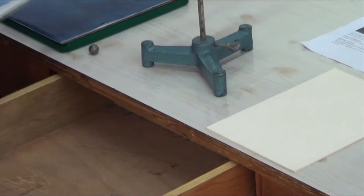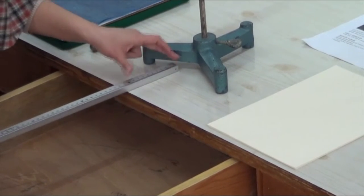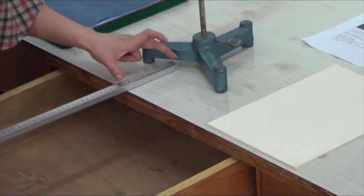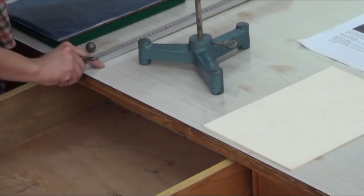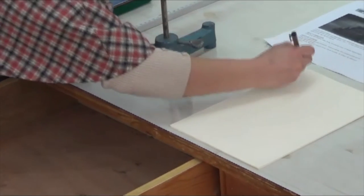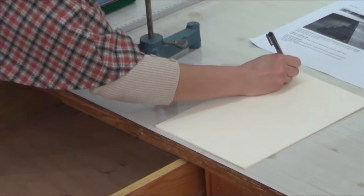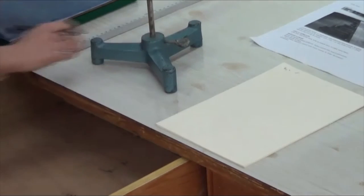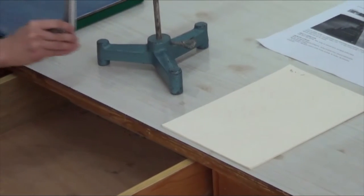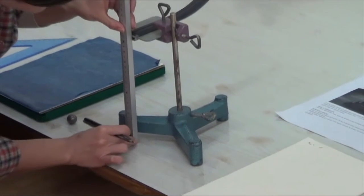Measure the horizontal distance from the point you have marked to the edge of the table and record it as x0. Then, measure the vertical distance between the point the ball leaves the track and the surface of the table. Record it as y0.